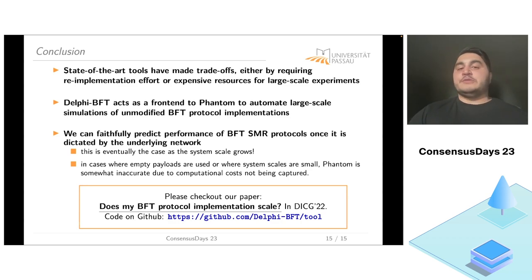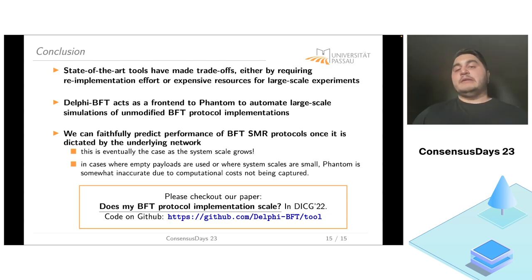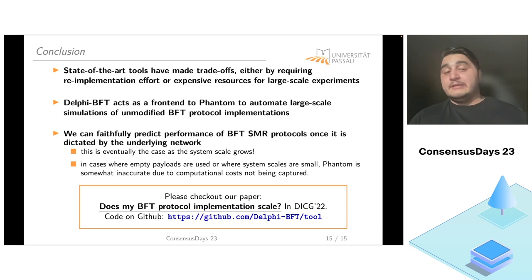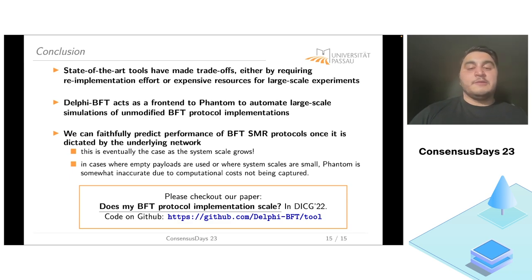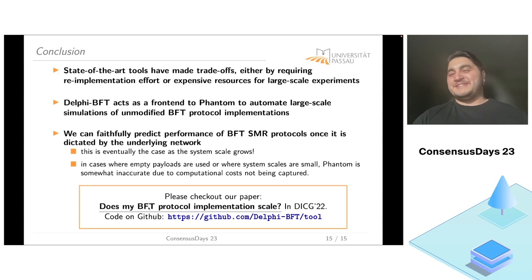To conclude: state-of-the-art tools involve trade-offs requiring either re-implementation effort or expensive resources for large experiments. We presented Delphi BFT, which acts as a frontend towards Phantom to automate large-scale simulations of unmodified BFT protocol implementations. We have shown that we can faithfully predict protocol performance once it is dictated by the underlying network, which is eventually the case as system scale grows. In cases with empty payloads or small system scales, Phantom is somewhat inaccurate due to computational costs not being captured — but this should change in the near future as ongoing work addresses this. Please check out our paper and code on our GitHub repository.